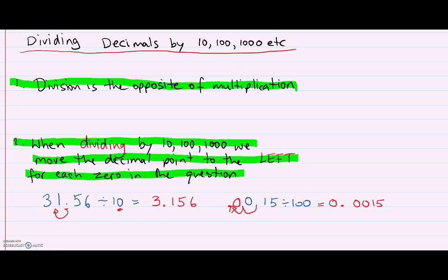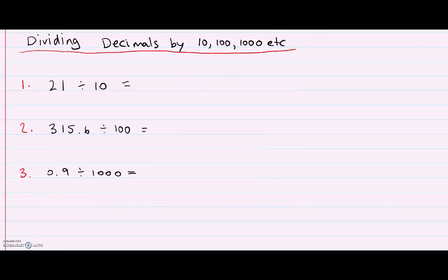Let's take a look at three examples. In question number one, I have 21 divided by 10. With 21, there's no decimal point, but we remember from the last video that with a whole number, the decimal point is technically straight after the units column. So we need to move it back to the left one spot between the two and the one. 21 divided by 10 is 2.1.